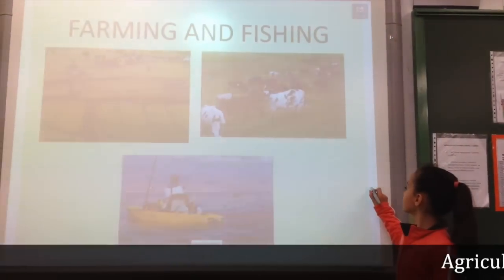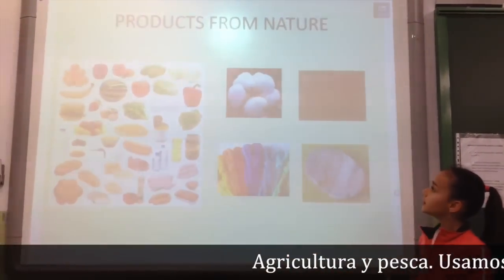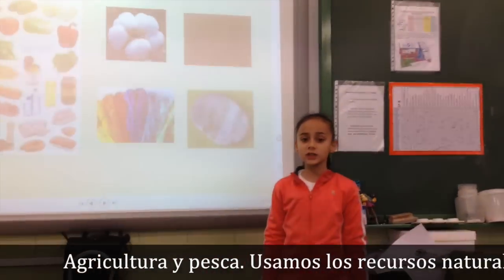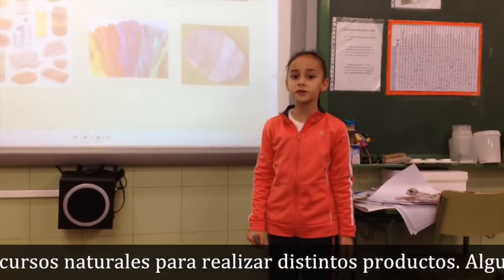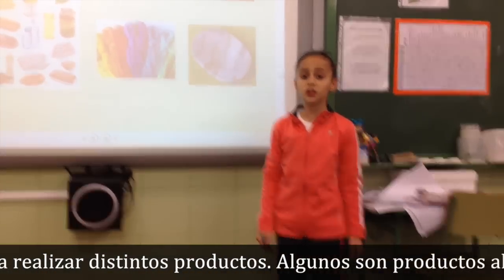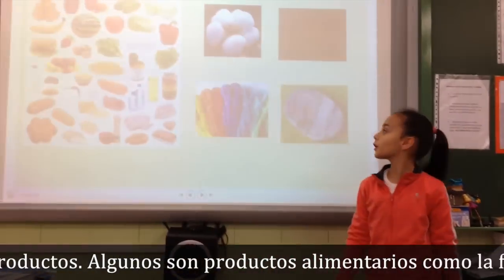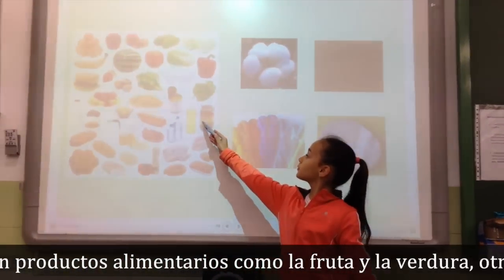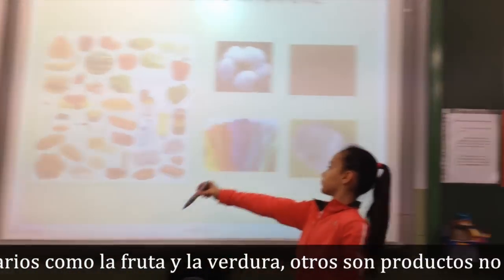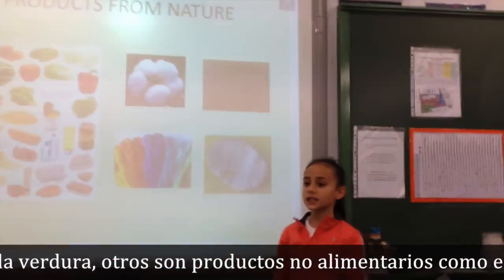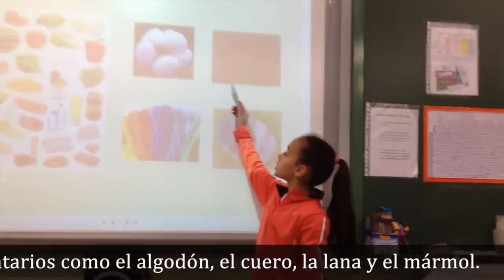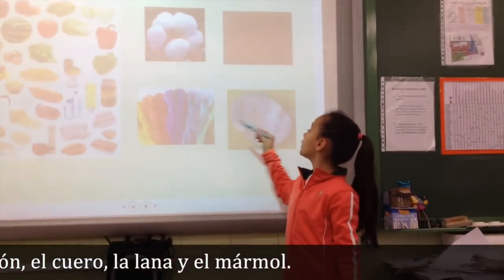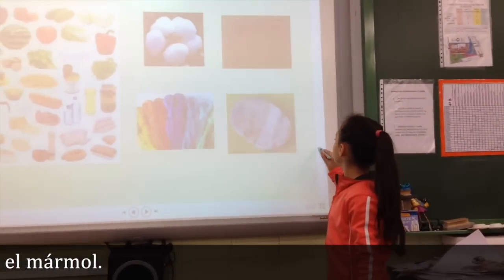Farming and fishing. We use natural resources to make many different products. Some of them are food products, like fruit and vegetables. Others are non-food products, like colors of leather, wood and marble.